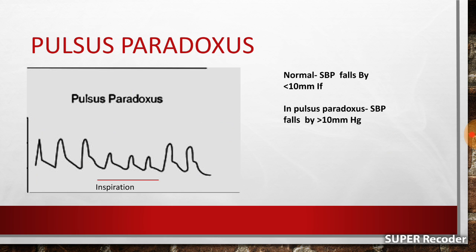Next comes pulsus paradoxus. The name suggests a paradox — something opposite to normal — but actually this is just an exaggeration of a normal physiological phenomenon. In a normal person, during inspiration, because there is negative intrathoracic pressure, there is increased blood flow into the right atrium and right ventricle. However, because there is inflation of the lungs, there is pooling of blood in the lungs, and venous return to the left side of the heart is reduced. Hence, during inspiration, you get a slightly lower volume pulse, and during expiration, a slightly higher volume pulse.